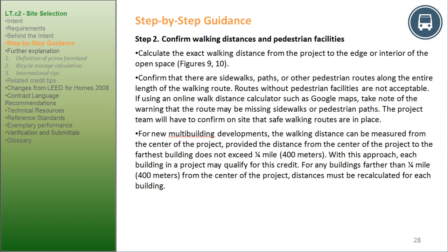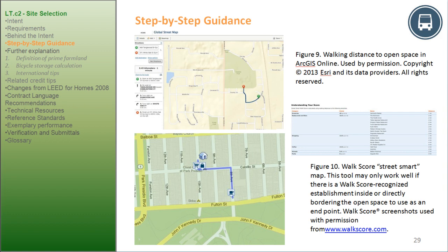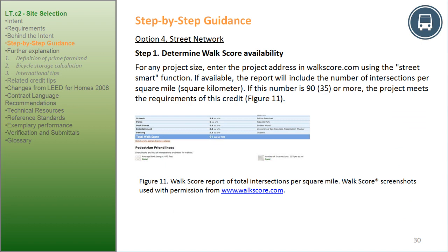Step 2: Confirm walking distances and pedestrian facilities — calculate the exact walking distance from the project to the edge or interior of the open space (see Figures 9 and 10). Confirm that there are sidewalks, paths, or other pedestrian routes along the entire length of the walking route; routes without pedestrian facilities are not acceptable. For new multi-building developments, the walking distance can be measured from the center of the project, provided the distance from the center to the farthest building does not exceed one-fourth mile (400 meters). Figure 10 uses Walkscore Street Smarts Map, which works best when there is a Walkscore-recognized establishment inside or bordering the open space.